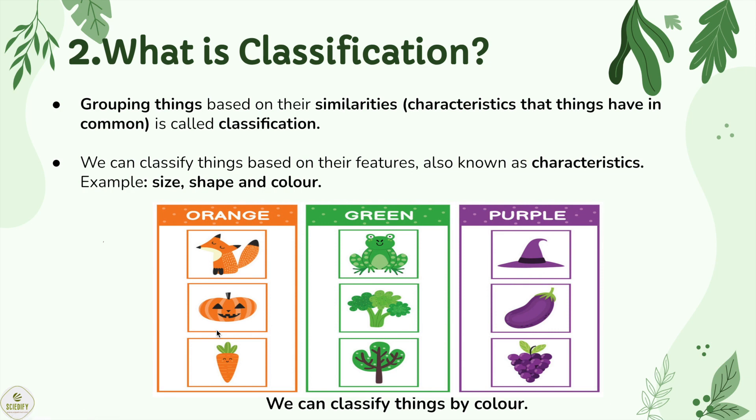What is classification? Grouping things based on their similarities — meaning characteristics that things have in common — is called classification. We can classify things based on their features, also known as characteristics. For example: size, shape, and color.